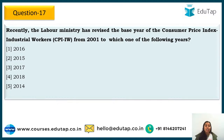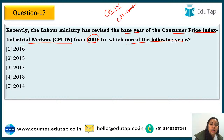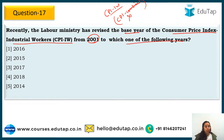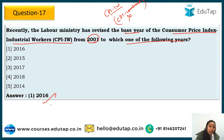Question 17: The Labour Ministry of India has recently revised the base year for Consumer Price Index — Industrial Workers (CPI-IW) from 2001 to which year? Important note: CPI combined has NOT been changed — do not get confused. The base year for CPI-IW specifically has been changed. Earlier it was 2001; now it has been made 2016. The answer is 2016.